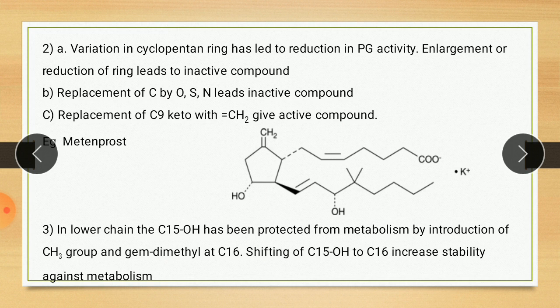Second point: variation in the cyclopentane ring leads to reduction in prostaglandin activity. Enlargement or reduction of the ring leads to inactive compounds. Prostaglandin contains a cyclopentane ring; if we reduce it to a 4-carbon cyclobutane or increase it to cyclohexane, the activity decreases. So the cyclopentane ring is essential — we can neither increase nor decrease the number of carbons. Furthermore, replacement of carbon by oxygen or nitrogen — that is, introducing a heteroatom, converting the ring to furan or thiophene — also leads to inactive compounds.